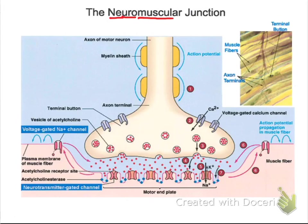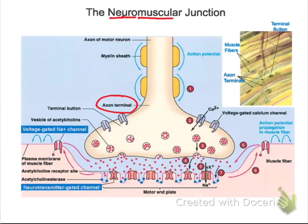Every single neuron has one process which is called an axon, and the axon is the sending process. It sends the electrical signal or the impulse down to the end, and what happens is that the axon branches into something called the axon terminal, which are a bunch of little feet-looking things, as you can see. Something interesting about nerve cells is that even though they interact with different cells, they actually don't touch them.